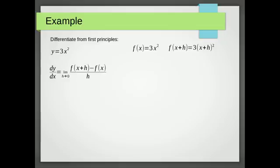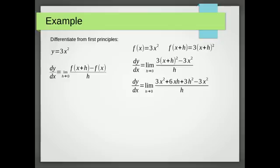We can now fill out the equation. So instead of f of x plus h, we put 3 times x plus h all squared. Instead of f of x, we put 3x squared. Then at this point, we're always going to expand the f of x plus h term. And we end up with this expression.